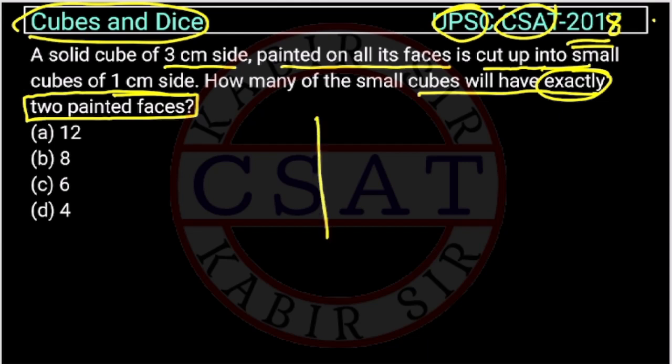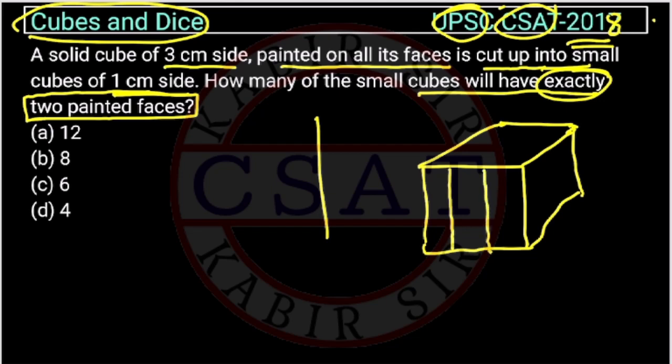So there is a cube. Suppose this is a cube and this is 3 centimeter side, so this is cut into 1 centimeter side, so there will be like this.